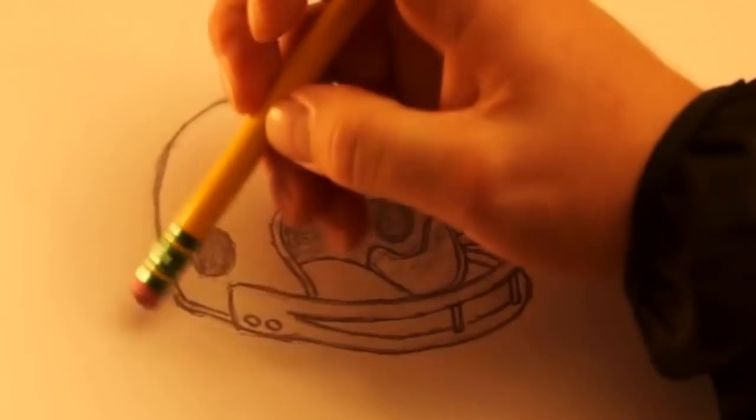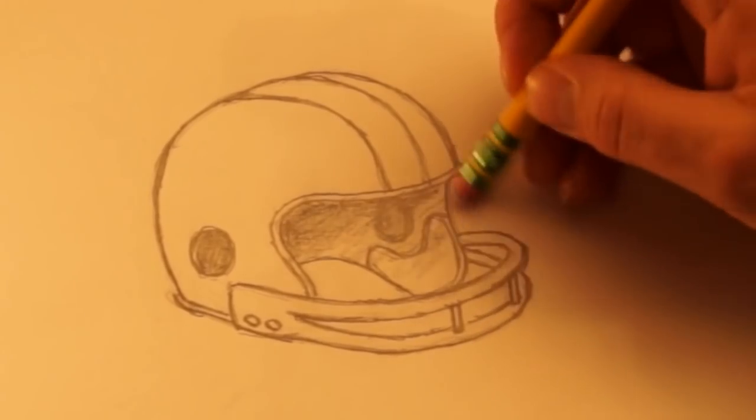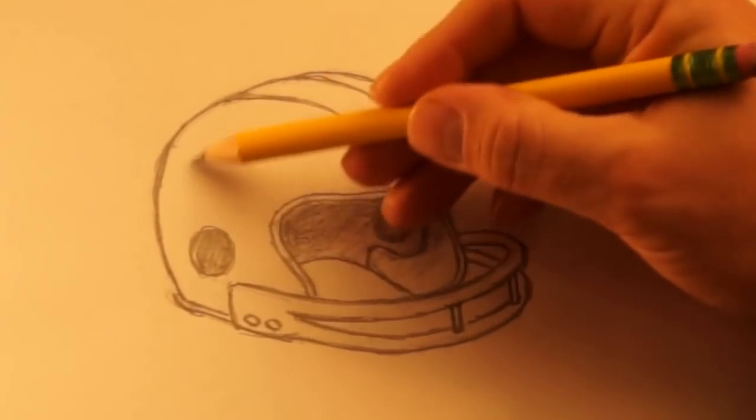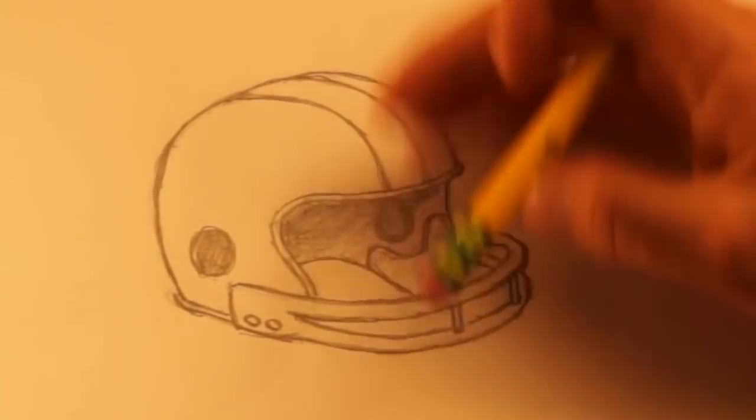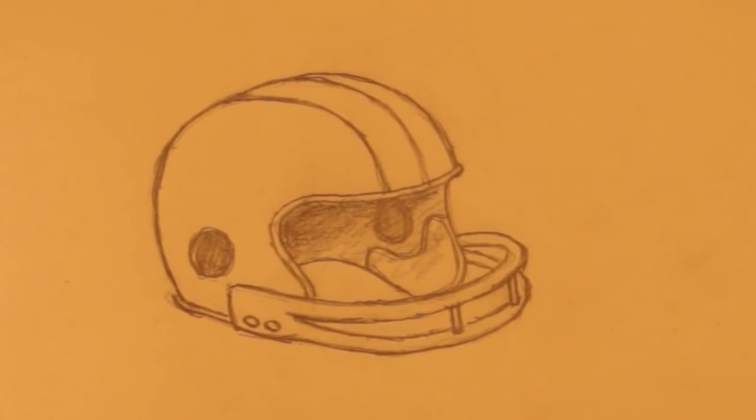Go ahead and clean up your drawing. Erase any lines that you don't need. Add the colors of your favorite football team. And if you have, you can put their logo or design for their team on the side, or a number for that particular player. And this is our drawing for today, a football helmet.